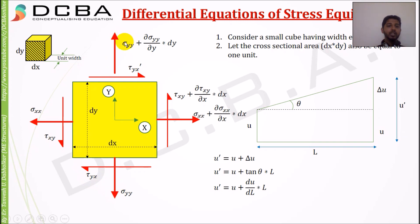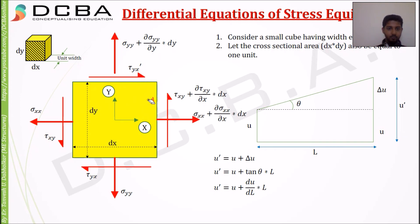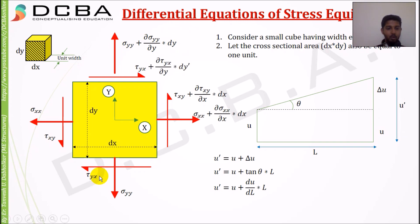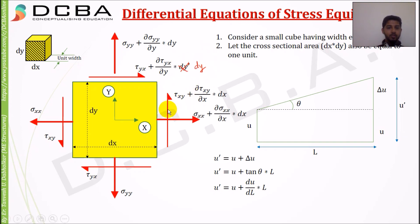Sigma_yy dash equals sigma_yy plus the partial derivative of sigma_yy in the direction of y, times dy. And tau_yx dash equals tau_yx plus the partial derivative of tau_yx in the direction of y, times dy.